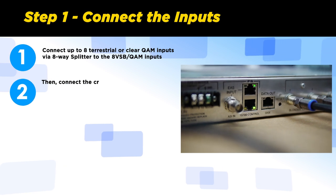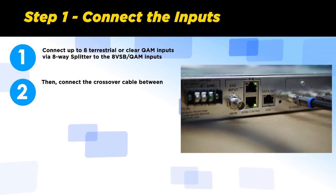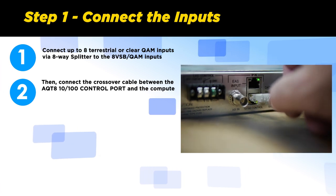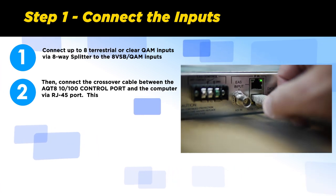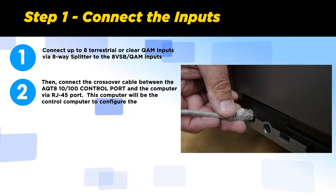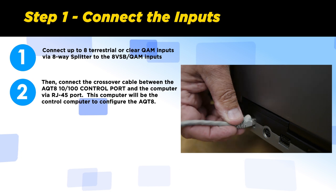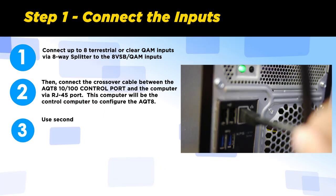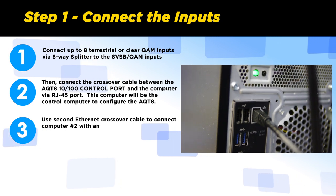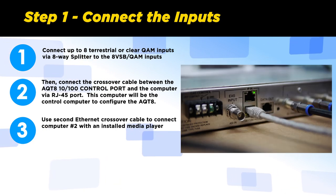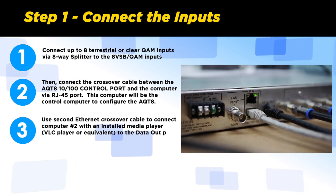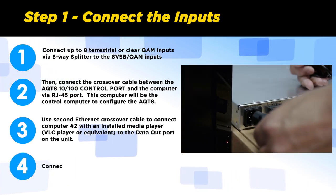Then connect the crossover cable between the AQT8 10/100 control port and the computer via the RJ45 port. This computer will be the control computer, used to configure the AQT8. Use a second Ethernet crossover cable to connect computer number two with the installed media player, VLC player or equivalent, to the data output port on the unit. Connect the power cord.